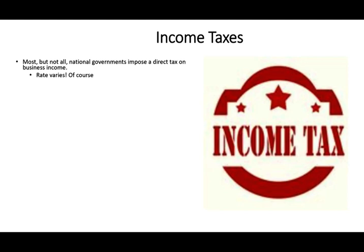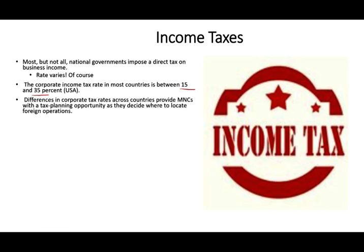In most countries, the rate ranges from 15 to 35%. The US used to be one of the highest rates, but it's been reduced to 21%. Because rates differ, this is an opportunity for multinational corporations — they can decide where to locate to minimize their taxes. You also have to be careful not only about national tax but also local tax — sometimes there's both a national tax and a local tax.